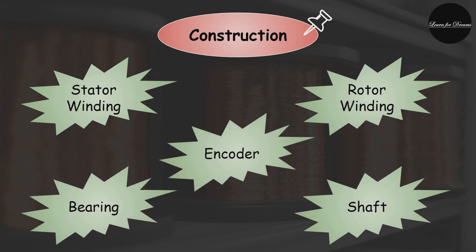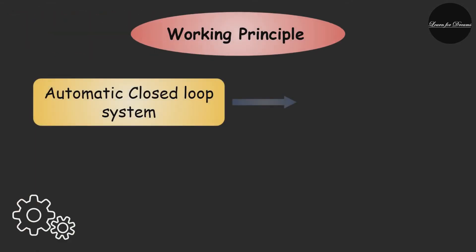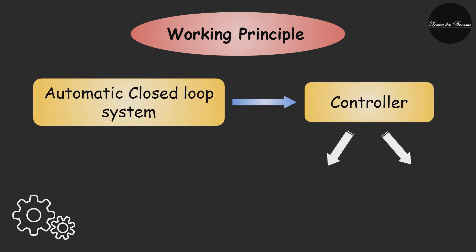Now the working principle. The servo motor works on the phenomenon of the automatic closed loop system. Controller is required. Controller has two parts: the comparator and the feedback path.